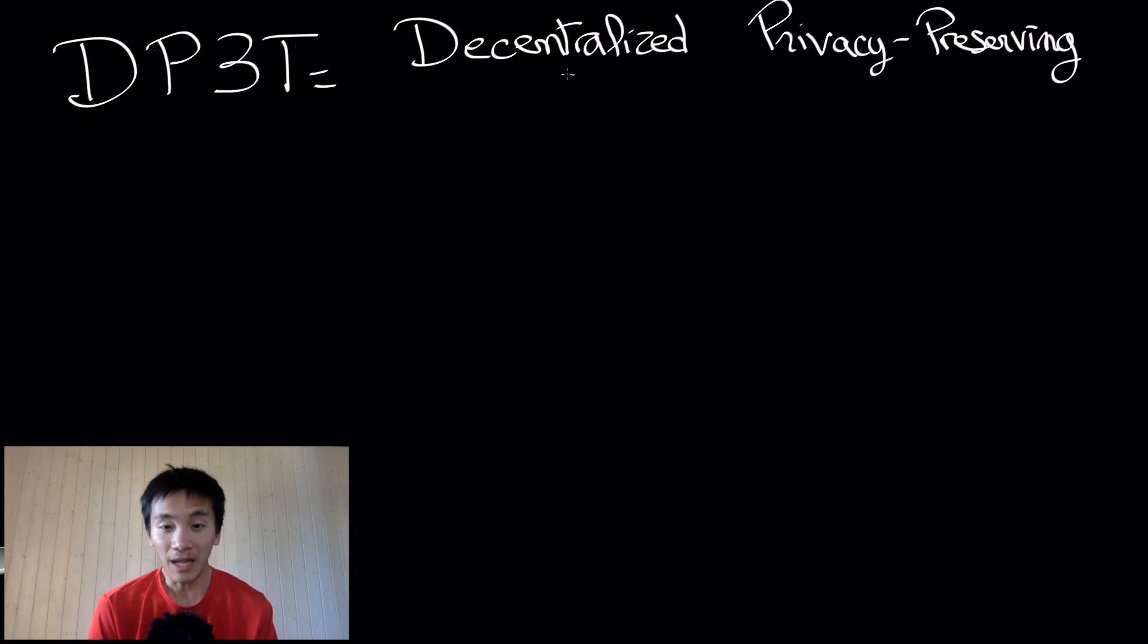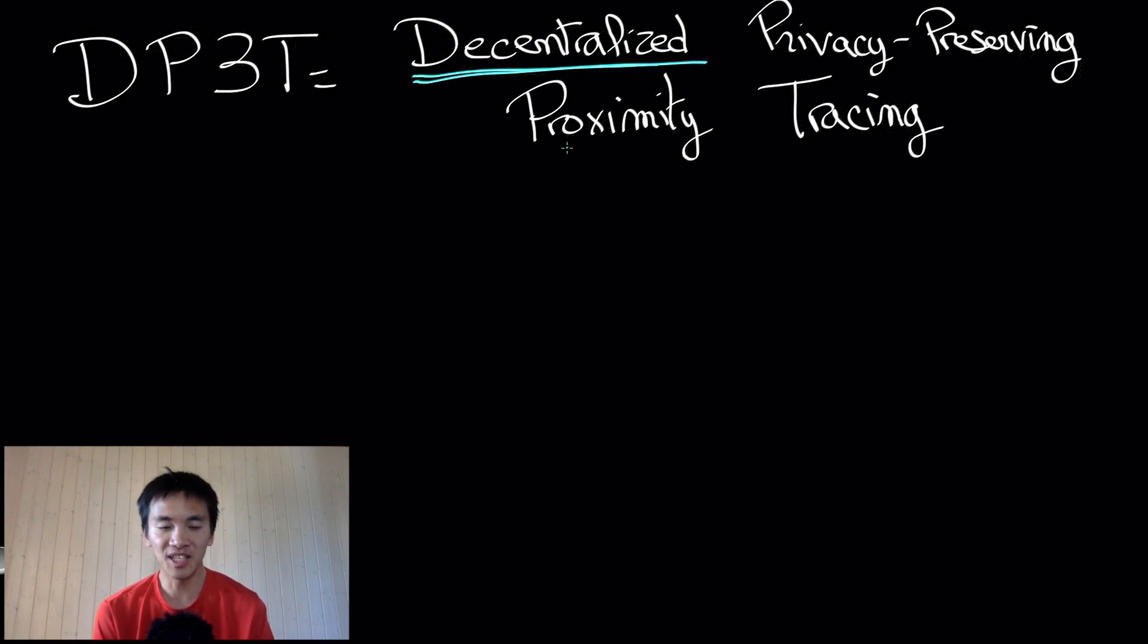In this video, we will discuss the basic ingredients of the DP3T protocol for decentralized privacy preserving proximity tracing. As its name suggests, DP3T has no central authority except for a server that is essentially a shared memory for all users.